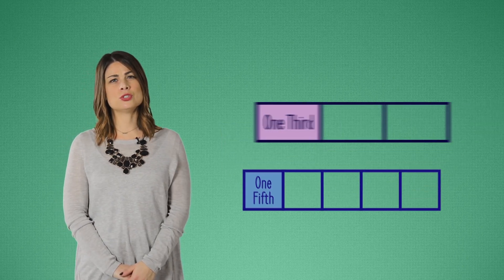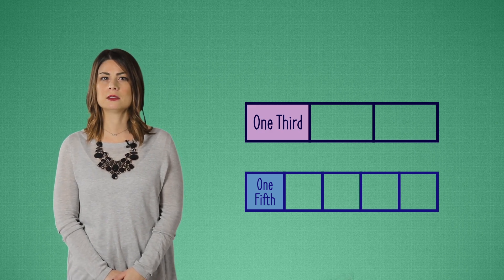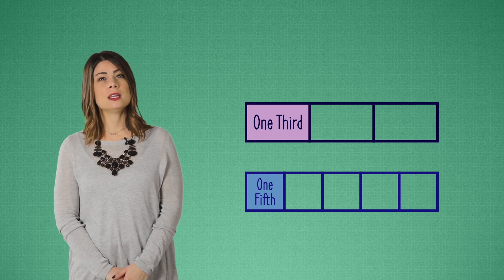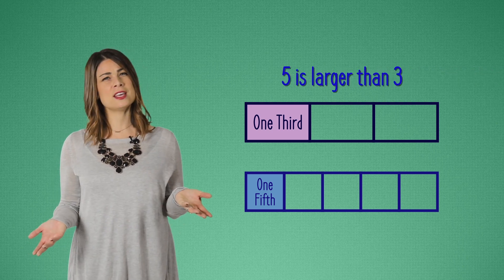Now what do you notice about these two fraction strips? Which one has a larger shaded area? The one third is larger than one fifth, even though five is a larger number than three. Why do you think that is?